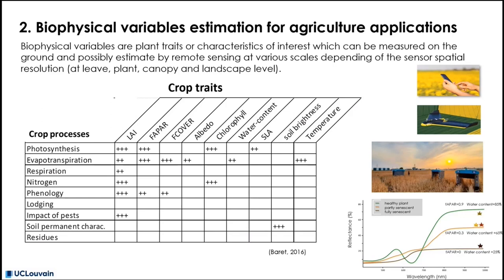These plant traits include LAI, FAPAR, F-cover, albedo, canopy chlorophyll content, plant water content, specific leaf area, and canopy temperature. Each of them is related to crop processes of interest for agriculture, like photosynthesis, evapotranspiration, or nitrogen management.